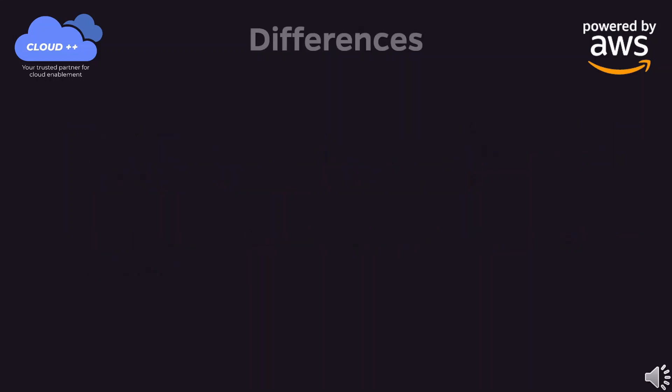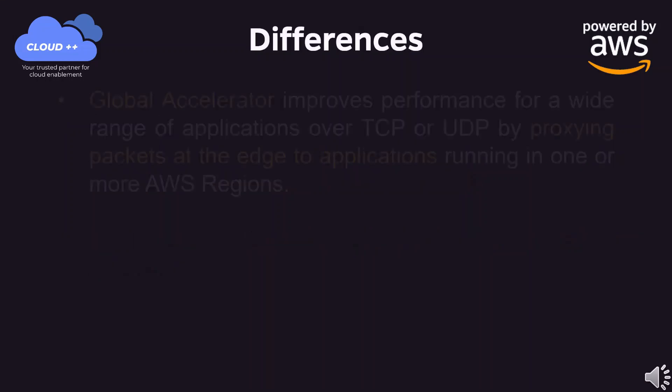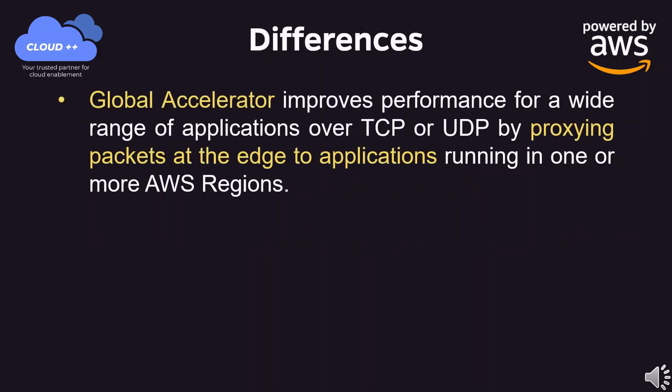Differences: Global Accelerator improves performance for a wide range of applications over TCP or UDP by proxying packets at the edge to applications running in one or more AWS regions.